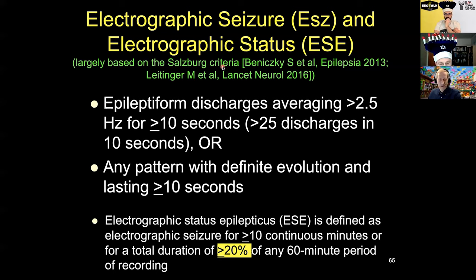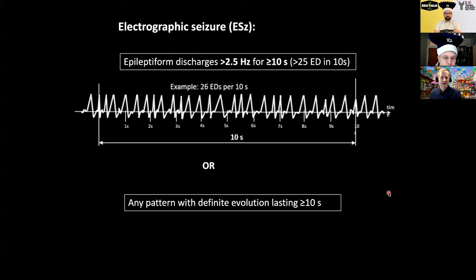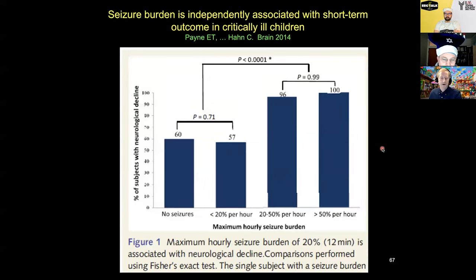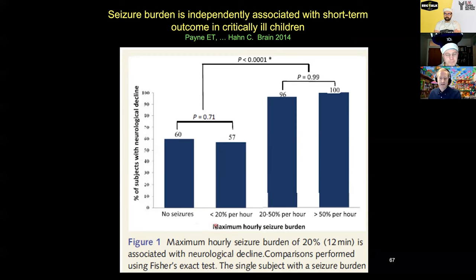So if there's more than 25 discharges in 10 seconds then your average is more than 2.5 hertz. Or the more traditional definition: any pattern that has definite evolution and lasts at least 10 seconds. The corollary is electrographic status epilepticus — any seizure that continues for 10 or more continuous minutes or for more than 20 percent of any hour. This diagram shows an example of what barely qualifies as a seizure: 26 sharp waves in a 10-second period. This graph from Pain et al. from Sick Kids in Toronto showed that the 20 percent cutoff is significant — once you exceed 20 percent maximum hourly seizure burden, the rate of significant neurological decline jumps way up.